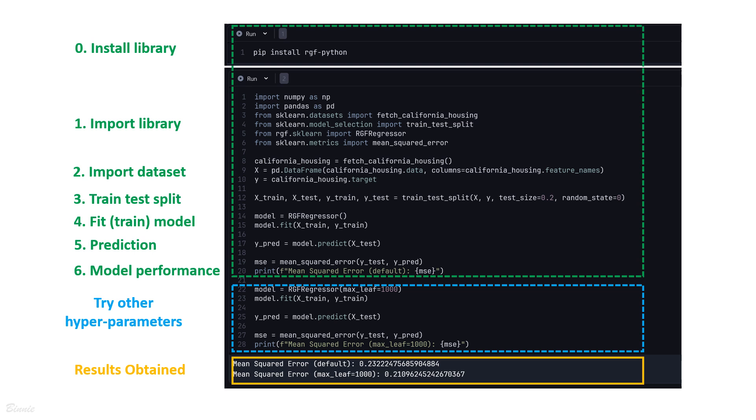The part of green dashed line is the Python code you need to input. The part of blue dashed line is optional to try other hyperparameters, and the part of orange solid line is the results obtained after running the Python code.